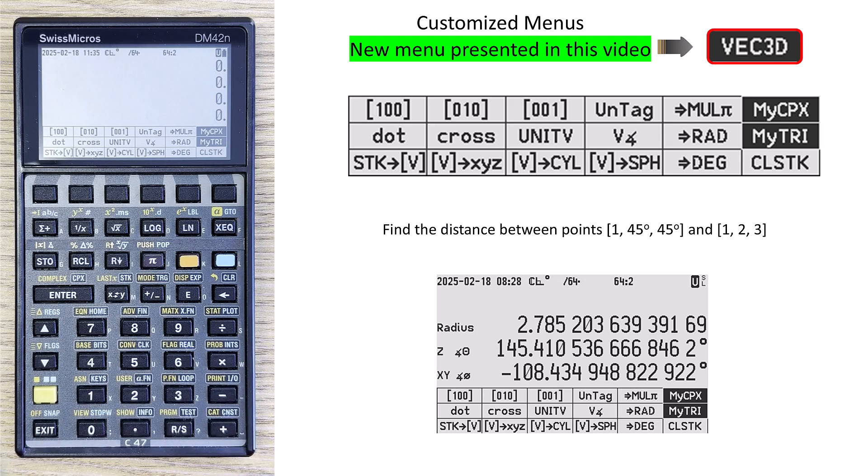Yeah, this is what I'm introducing. A vector, a 3D vector menu on the DM42, on the C47 calculator, that makes it a little bit easier to do vector manipulations. Thanks for watching. See you in the next video.